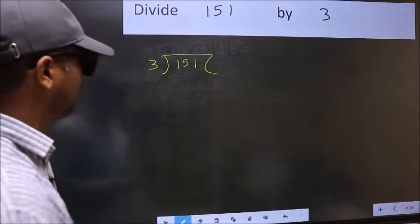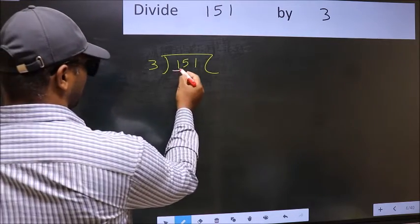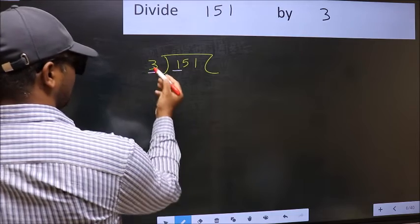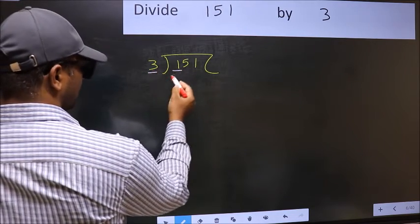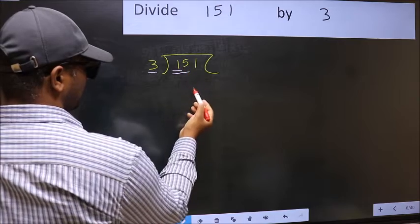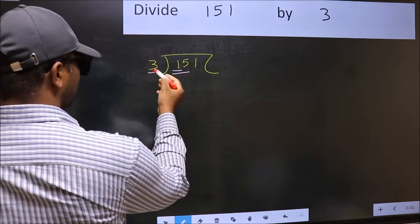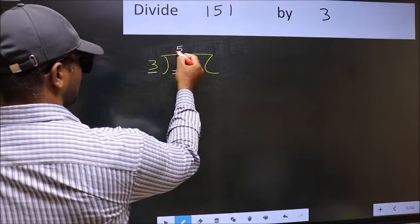Next. Here we have 1 and here 3. 1 is smaller than 3. So, we take 2 numbers, 15. When do we get 15 in 3 table? 3 fives 15.